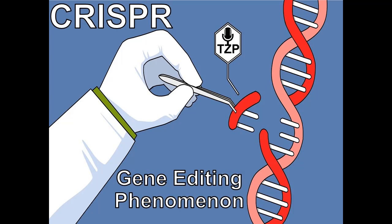That was until 2018, when a Chinese scientist — He Jiankui — stepped over the ethical line and actually used CRISPR to edit embryos produced by in vitro fertilization of HIV-negative women with sperm provided by HIV-positive men. He Jiankui and his colleagues used CRISPR to produce a mutation in the CCR5 gene by making the CCR5 protein non-functional.